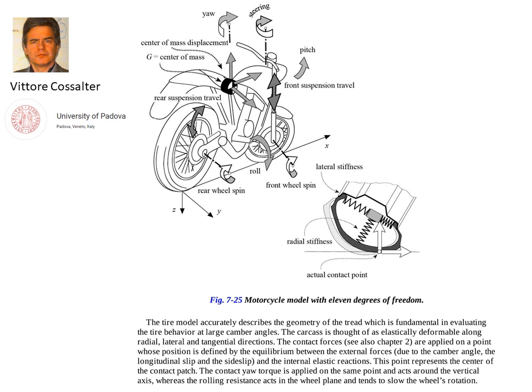Additionally, the tire, as you can see down there on the lower right, also gives you some radial, lateral, and tangential directional movement, which add even more degrees of freedom.